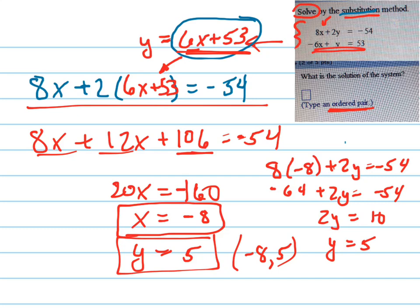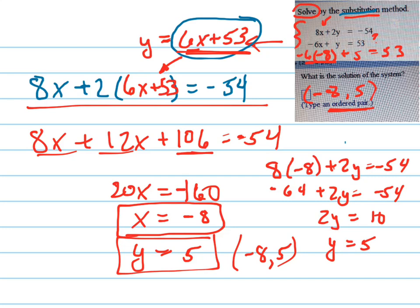This is going to be negative 6 times negative 8 plus 5 — because that's what y was, 5 — equals 53. Let's see if that's true. Negative 6 times negative 8 is 48. 48 plus 5 is 53. So it works. So I'm going to write my answer in right here: negative 8, comma 5. I checked it and I know it's right, because it worked in both equations. That's how you solve a system by the substitution method.